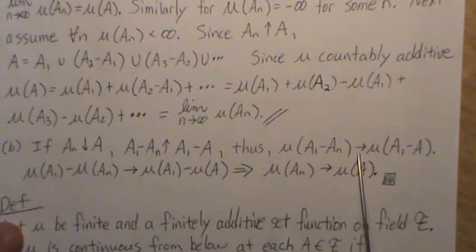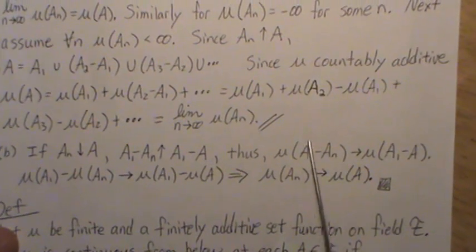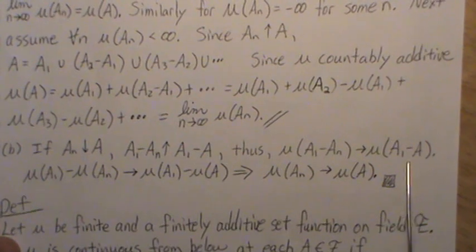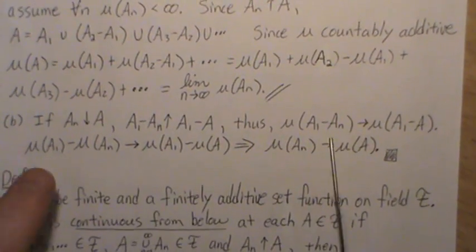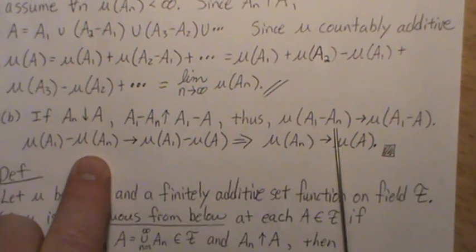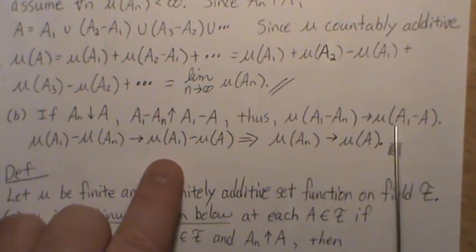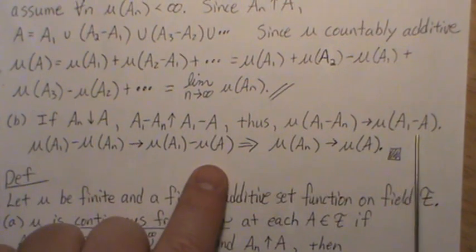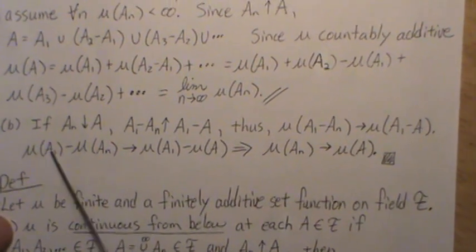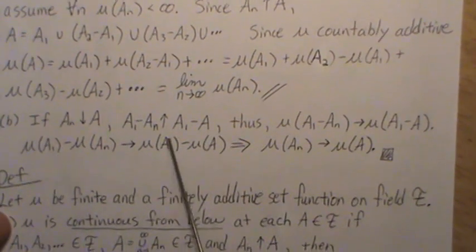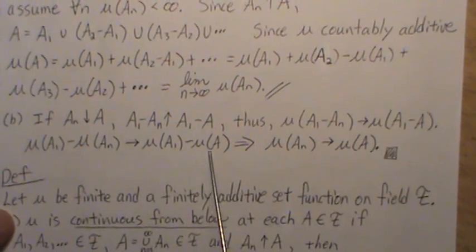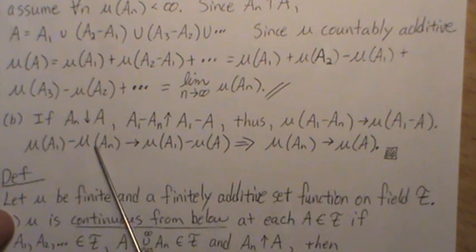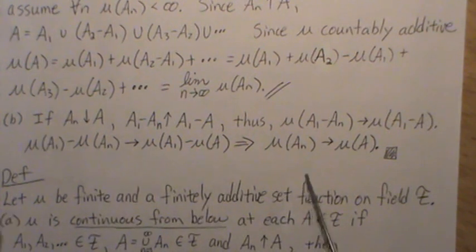As N goes to infinity, this measure equals this measure — we just proved that in Part A. But these are subsets of each other, so the measure of An minus the measure of A limits to the measure of A1 minus the measure of A. Since these are finite and equal, we can subtract them and multiply by minus one, and that shows it does indeed hold. So the theorem is proven.